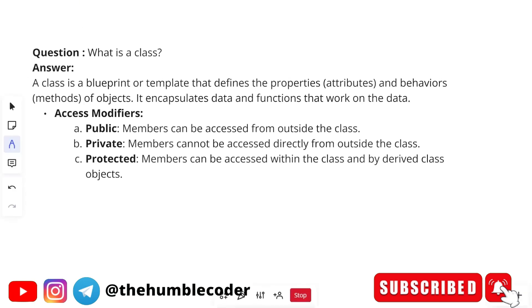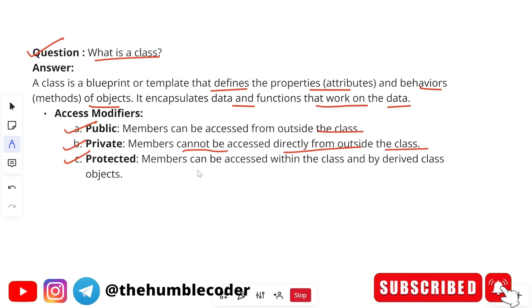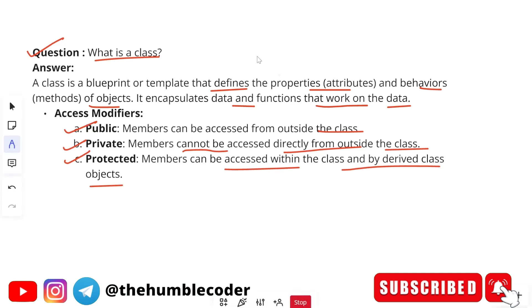Next question: What is a class? A class is a blueprint or template that defines the properties and behaviors — meaning methods — of objects. It encapsulates data and functions that work on data. Access modifiers we have are public, private, and protected. Public means members can be accessed from outside the class. Private means members cannot be accessed directly from outside the class. Protected means members can be accessed within the class and derived objects.